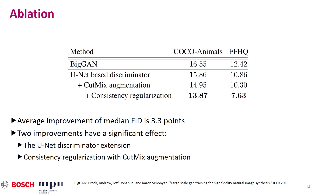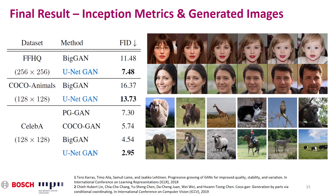For our experiments, we take the state-of-the-art BigGAN as baseline. We turned the discriminator of BigGAN into a U-Net by adding the decoder and the skip connections. We did not change any of the learning parameters. Image generation quality is measured by the FID score, where lower means better. Here we see that the two biggest improvements come from the U-Net architecture as well as the consistency regularization. We achieve the best outcome when combining CutMix augmentation and consistency regularization. Our method improves on all three datasets over the state-of-the-art baselines.